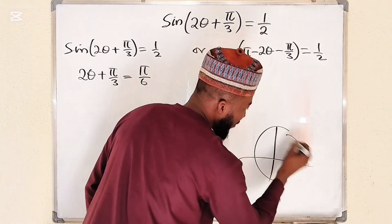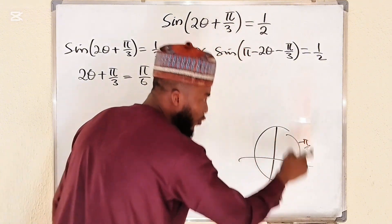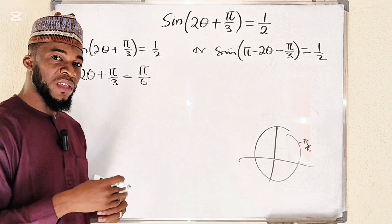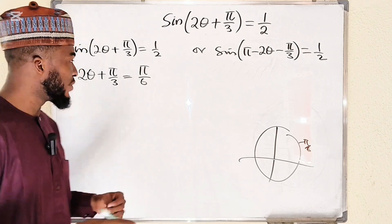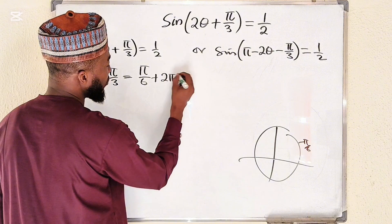But remember, given that this is pi divided by 6, if you go around you come back to where you started. You have to get infinitely many coterminal angles.